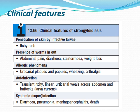Systemic manifestations include diarrhea, pneumonia, meningitis, and encephalitis, and sometimes death in very heavy infestation if left untreated, especially in immunocompromised patients.